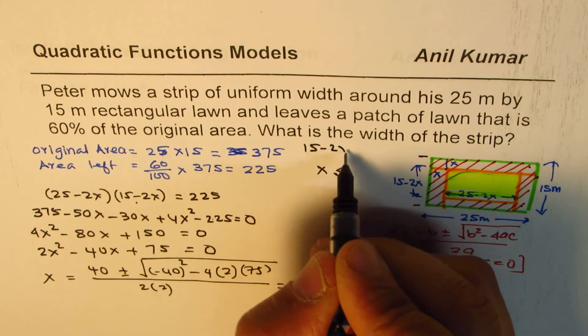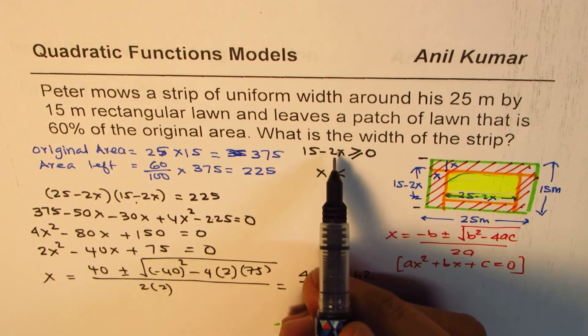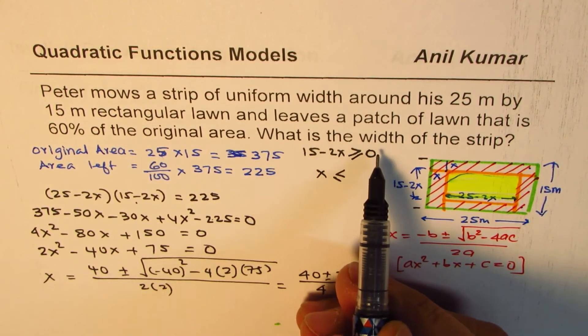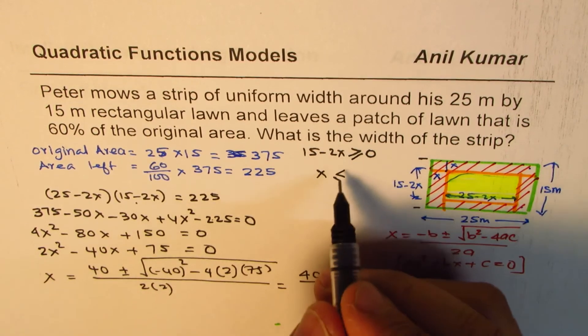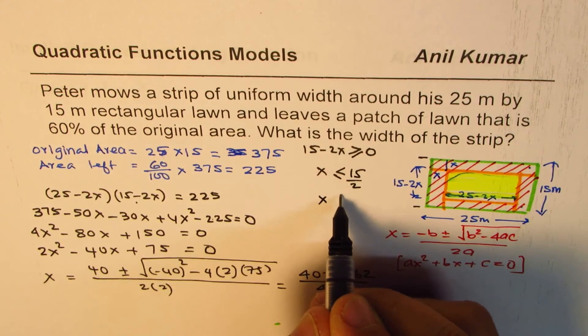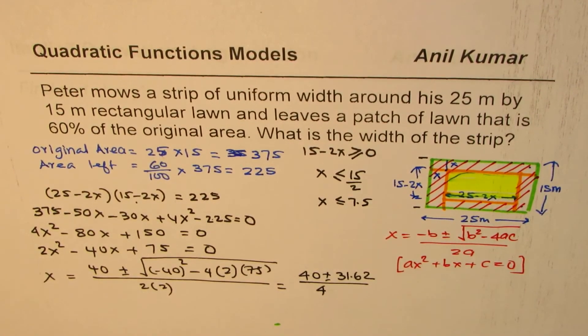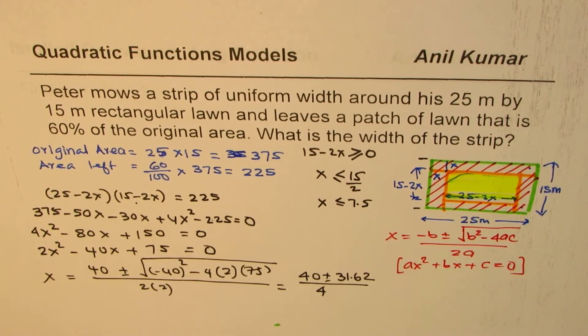When you take this to the other side then divide by 2, x has to be less than or equal to 15/2. So x has to be less than or equal to 7.5. That becomes the restriction, which is very important to understand. In all these word problems you also have restrictions, so we write this as our restriction.